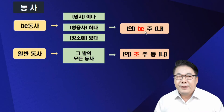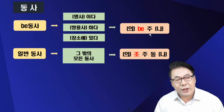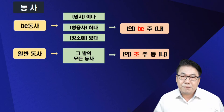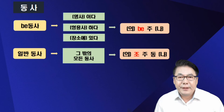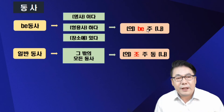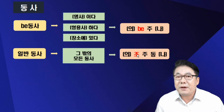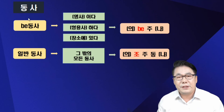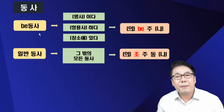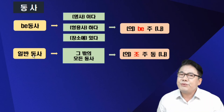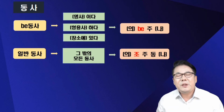의비주나를 경부선 버스라고 치고, 의조주동나를 호남선 버스라고 치자고요. 이 두 버스로 거의 90%가 왔다 갔다 하는 겁니다. 경부선 버스를 타면 경부선 쪽으로 가고, 호남선 버스를 타면 호남선 쪽으로 가는 건데, 문제는 버스를 타기 전에 먼저 해야 될 선행이 있죠. 경부선 버스 타려면 경부선 터미널로, 호남선 버스 타려면 호남선 터미널로 가야 되겠죠. 이게 바로 우리말 문장에서 비동사와 일반 동사를 구분하는 훈련이 돼야 되는 겁니다.